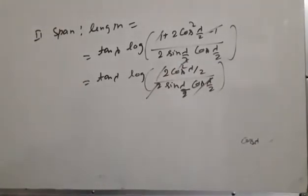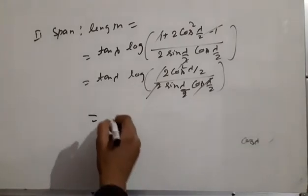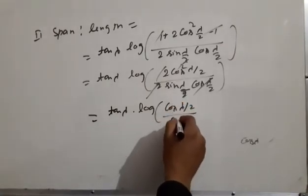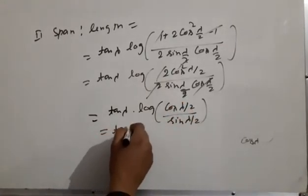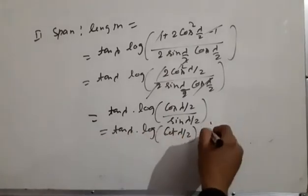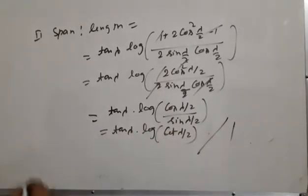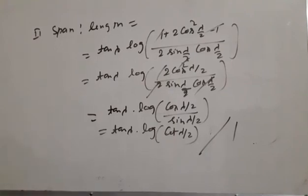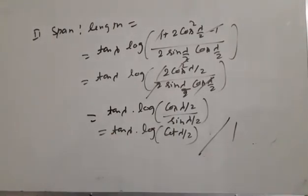Therefore, span ratio equals tan(lambda) times log(cos(lambda/2) upon sin(lambda/2)), which is tan(lambda) times log(cot(lambda/2)). The ratio of span to length equals tan(lambda)·log(cot(lambda/2)). This is the final answer for the second part.